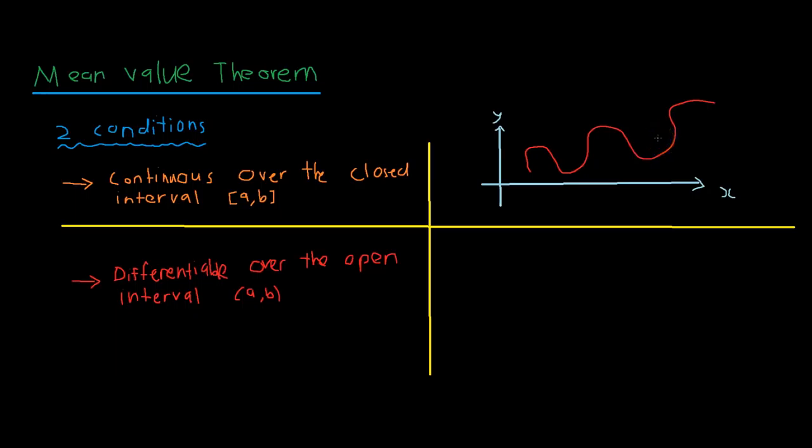The second condition is that the function is differentiable over the open interval (a,b). Differentiable means there are no jagged edges. The example to the right shows a function that is differentiable with no jagged edges, and one that is not differentiable, as you can see by the pointy tip. Note that the closed interval includes the endpoints, whereas the open interval doesn't.